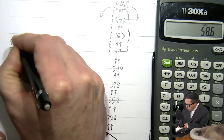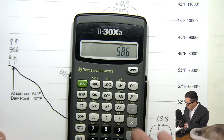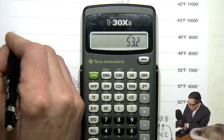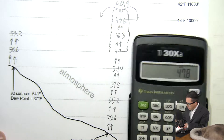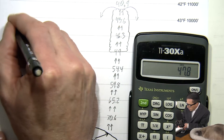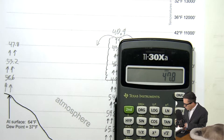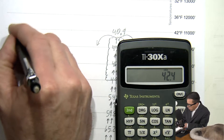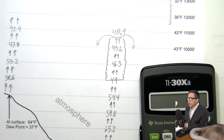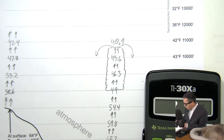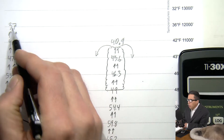I compare over here — it's warmer than 48 so we're going to keep on going. I'm just testing every thousand feet: subtract another 5.4, that's 47.8, which is warmer than 43, so I keep going. I get 42.4 which is warmer than 42, so it's going to keep on going. Subtract another 5.4 and I get 37.